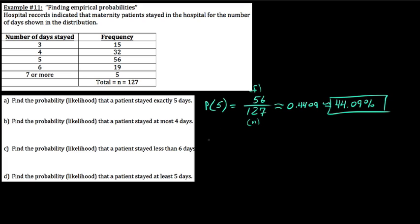A little bit different. This next one says, find the probability or likelihood that a patient stayed at most four days. First of all, this is no longer a simple event. This is a compound event. Let's think about what at most means. It means no more than. So it could be four or three days. We say it could be three or four is another way to write at most four. So we're going to write less than or equal to four days. We had 127 respondents. How many stayed four or less? You actually have to add up these two classes here, the 32 and the 15. So 15 plus 32, we get 47. 47 out of 127.